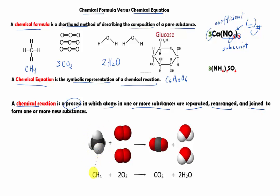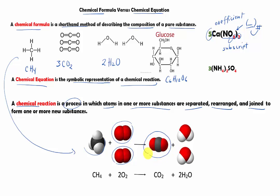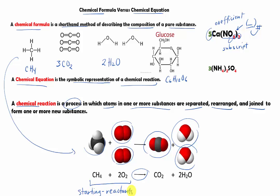For example, here we have the combustion of methane. We have CH4, and it reacts in the presence of oxygen. In this chemical reaction process, the atoms in methane and the atoms in oxygen are separated, and they recombine to make carbon dioxide and water (H2O). Notice how the equation is separated by an arrow — on the left side of the arrow is the starting material, which we call the reactant.